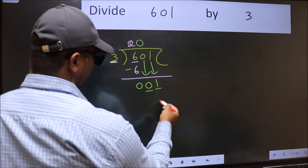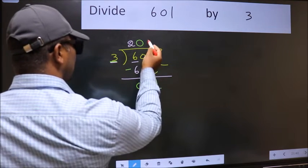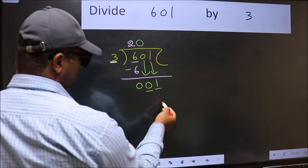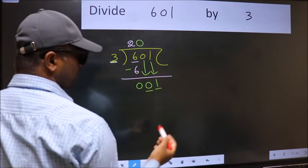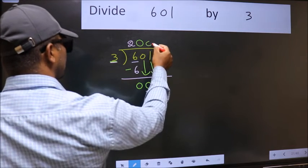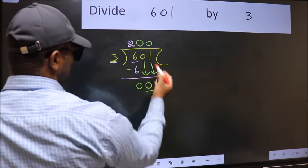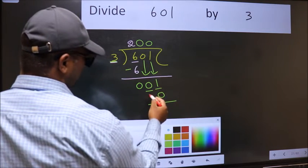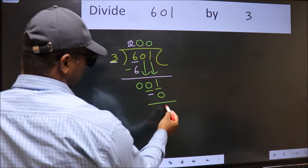If I take 1, we will get 3. But 3 is larger than 1. So what we should do is we should take 0. So 3 into 0 is 0. Now we should subtract. 1 minus 0 is 1.